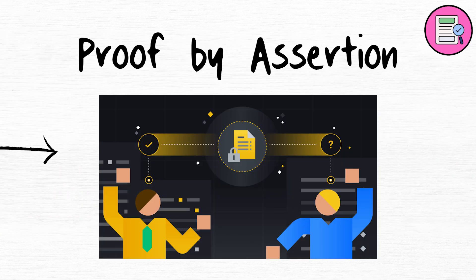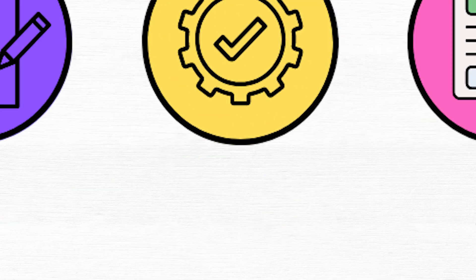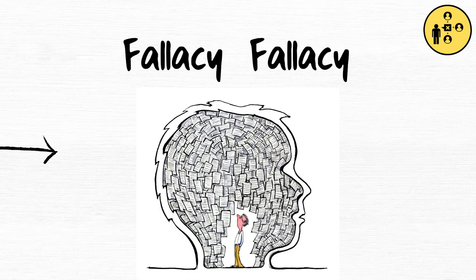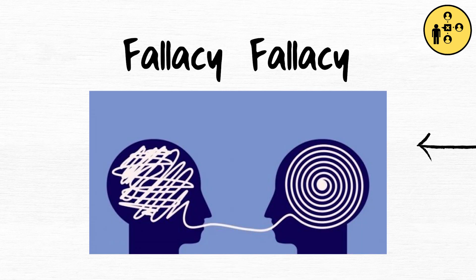Proof by assertion. The proof by assertion fallacy repeats a proposition without evidence. Fallacy fallacy. The fallacy fallacy assumes a conclusion is false because the argument contains a fallacy.